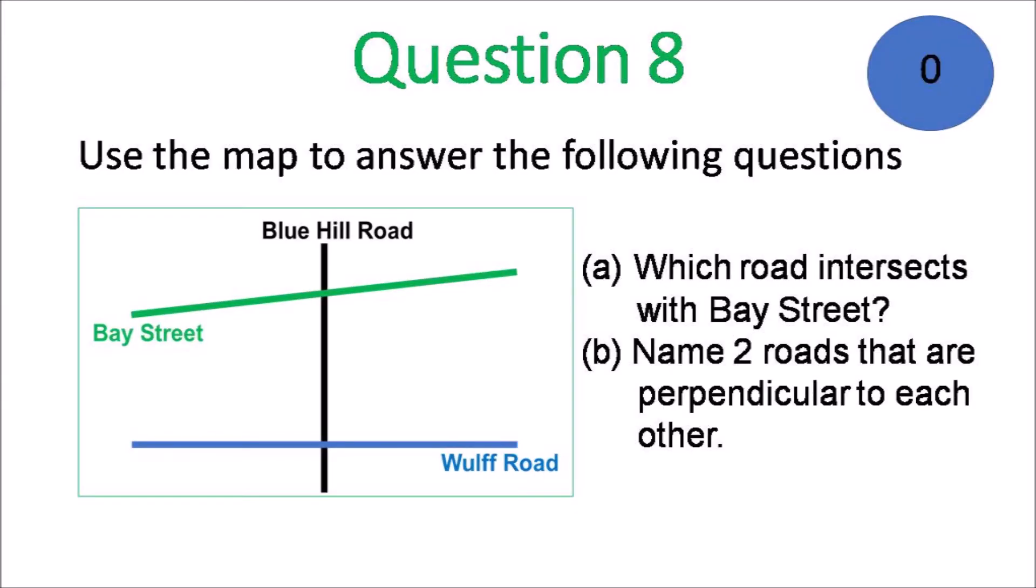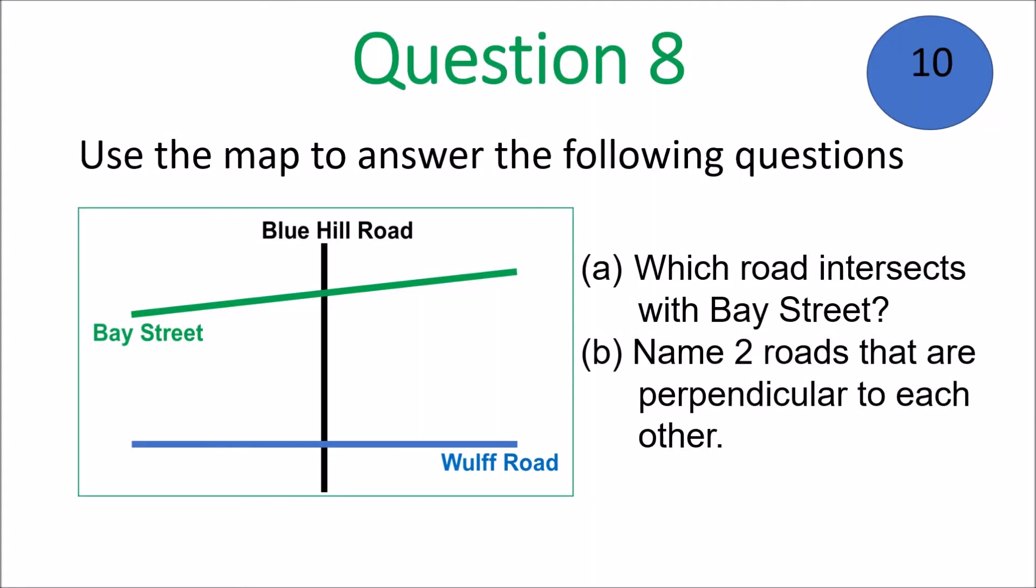Wrap it up. We move on to question 8. Use the map to answer the following questions. A. Which road intersects with Bay Street? B. Name two roads that are perpendicular to each other. Yeah. There's a big word in there. Perpendicular. You must know what it means. Just look at the drawings and figure it out.